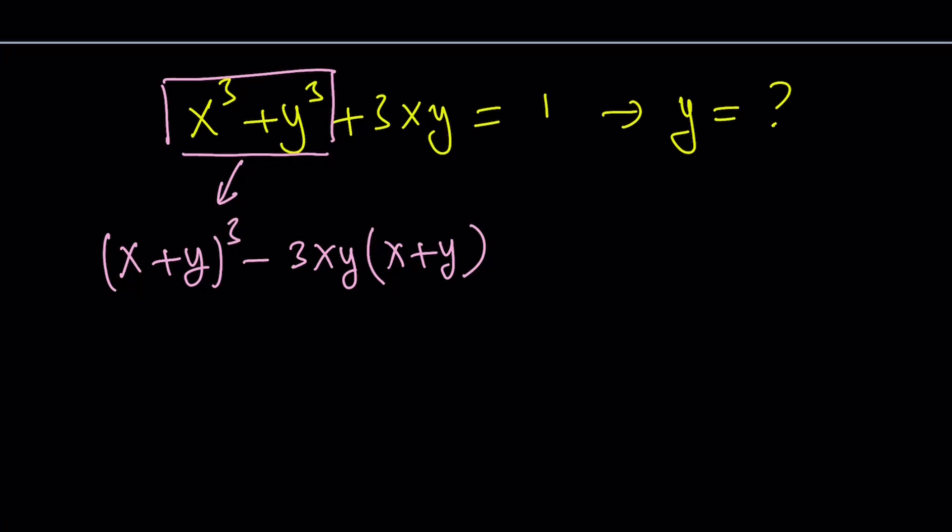That is the x cubed plus y cubed part. Let's add 3xy to this and set it equal to 1. Let's subtract 1 from both sides and set the whole thing equal to 0. We got this interesting cubic expression. Let's factor it by grouping.